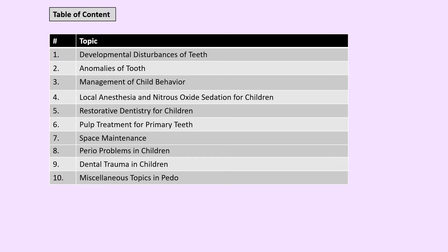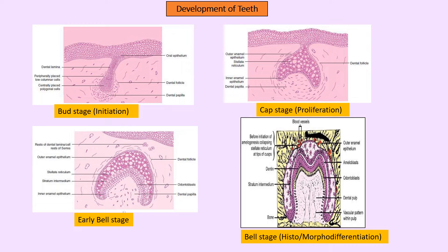The development of teeth has different stages: the bud stage, the cap stage, the early bell stage, and the bell stage. In the bud stage there is a dental lamina arising from the oral epithelium, which will thicken at the site of tooth bud formation — at 20 places for 20 primary teeth. In the cap stage it takes a cap shape with three layers being added: outer enamel epithelium with short cuboidal cells, inner enamel epithelium with tall columnar cells, and stellate reticulum filling the spaces in between.